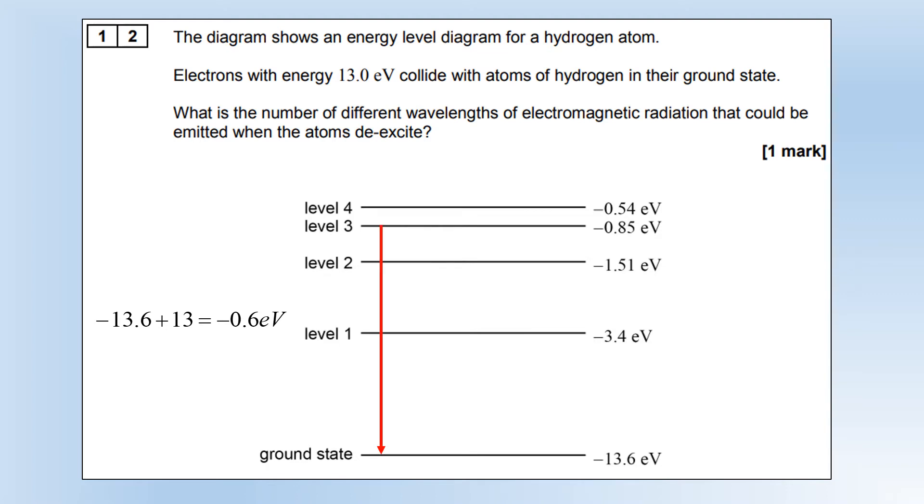From level 3 it could come straight down to ground state. It could go to level 1 and then down to ground state. It could go to level 2 and then it could go to level 1 or straight down to ground state. You can see there are six unique photon energies that could be produced by that process. Even if it gets excited to level 2 or level 1 by the electron, we still have the same number of photons being produced.